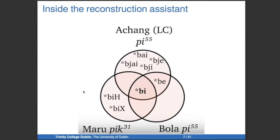For example, running the software backwards on Achang gives possible reconstructions like *bay, *ba, and *bi, whereas running them backwards on Maru gives different possibilities. But if these three words are cognate — which we have hypothesized — the only reconstruction that predicts all attested forms is the one in the middle. We run all sound changes backwards on all attested forms and take the intersection of possible reconstructions. The key insight is that reconstructions are never stored anywhere — they're always created on the fly by applying sound changes to the attested forms.